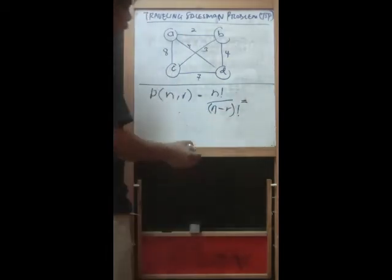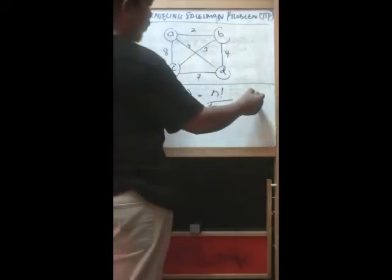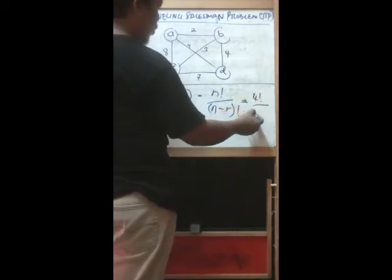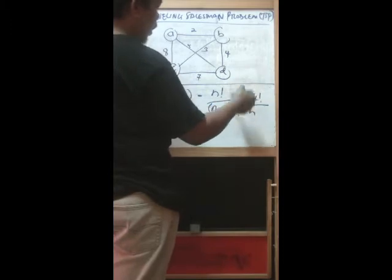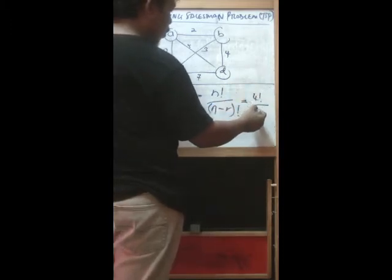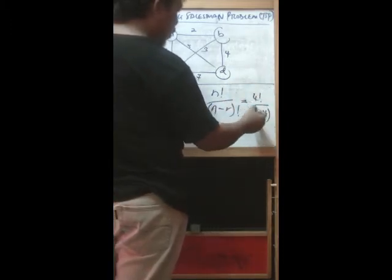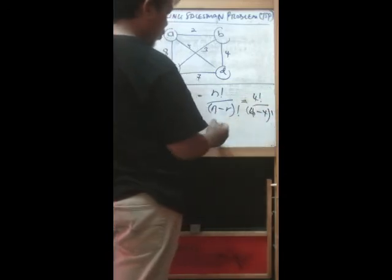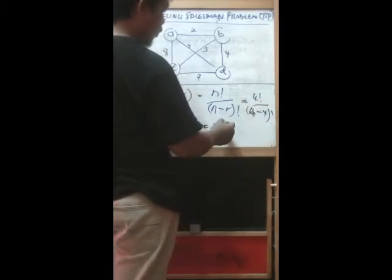For this basically N is equal to 4, so 4 factorial. We have 4 and taking also 4, so 4 minus 4 factorial. This 0 factorial equals 1, so 4 factorial equals 24.